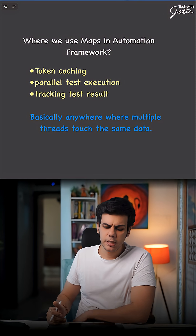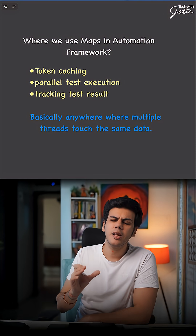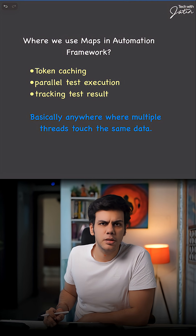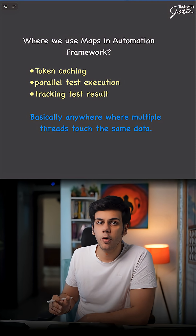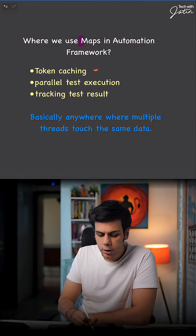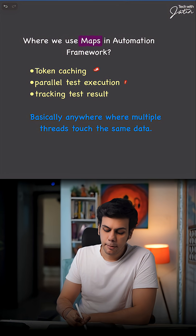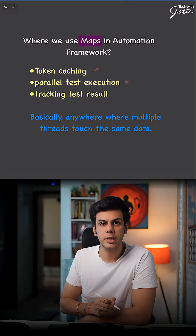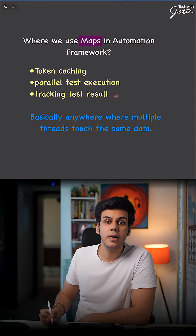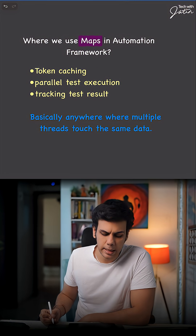What are you going to say? Now understand this part — you can't run away from the topic of maps in your automation framework, because we use maps for token caching, parallel test execution, as well as tracking of the test results.